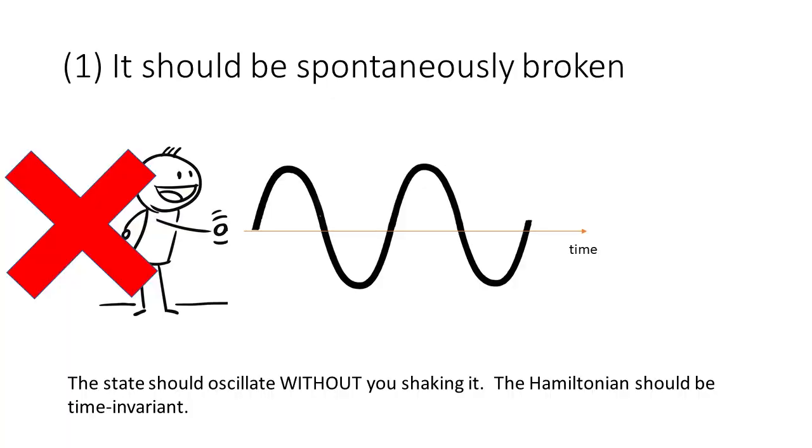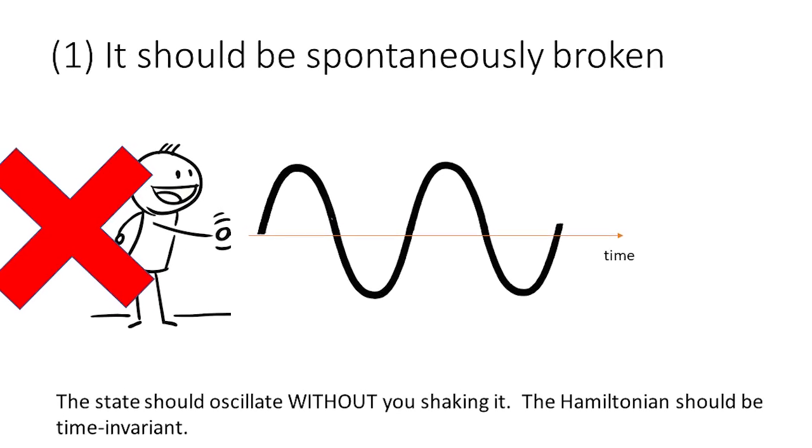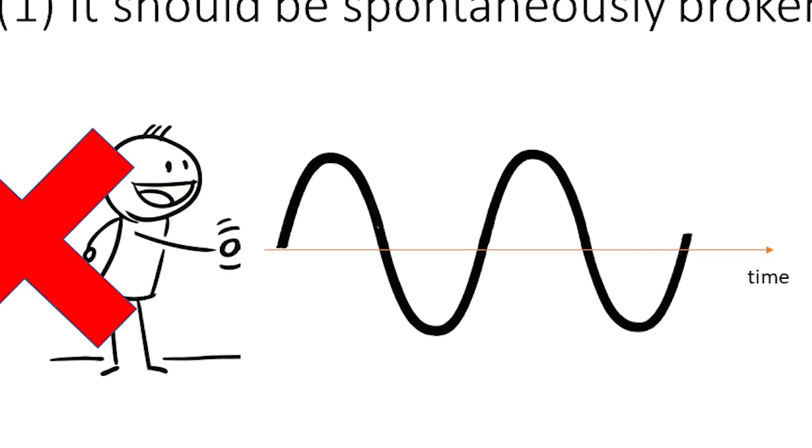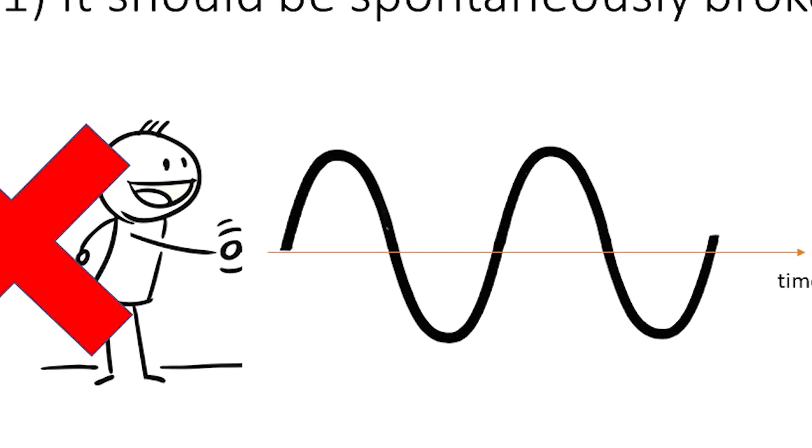Instead of just being an oscillator, we need this extra ingredient to have spontaneous symmetry breaking. It should be something that's oscillating, but it shouldn't be oscillating because you are shaking it around. It should just be oscillating because that's the natural state that the system prefers to be in. The oscillation should arise despite the fact that the Hamiltonian is completely independent of time. You write down your Hamiltonian, there's no time varying parameters, yet somehow the system likes to oscillate. Time symmetry is spontaneously broken.